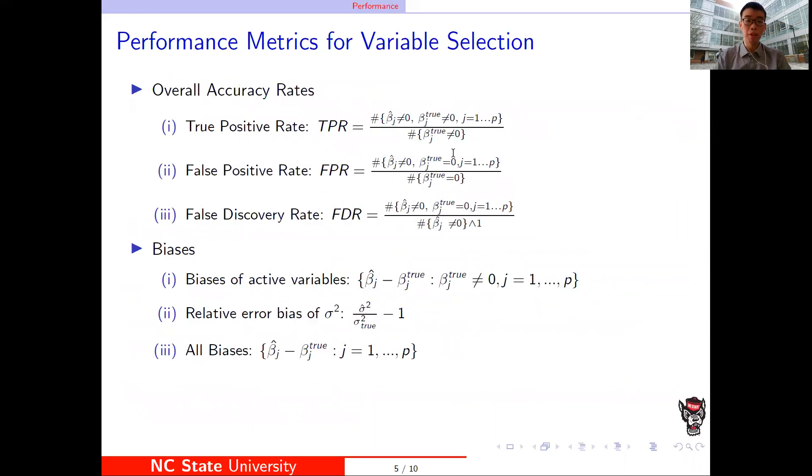For the performance of different variable selection methods, we compare the accuracy rates, including the TPR, FPR and FDR. For TPR, if the variable selection method's TPR is close to one, which is better.